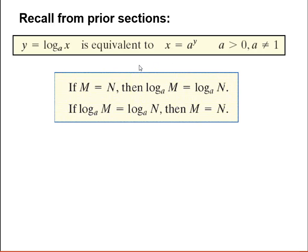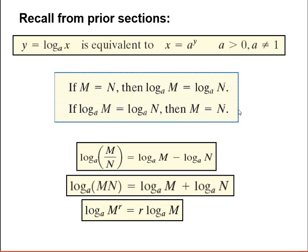Also, don't forget that we can use the property that if m equals n, then log base a of m equals log base a of n — meaning I can log both sides of an equation. Going the other direction: if I have two logs set equal to each other with the same base, I can drop the logs and set the two insides equal to each other. And we have those three properties — the quotient rule, product rule, and power rule — where we typically go backwards, combining into one logarithm.